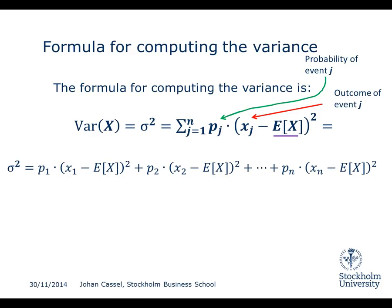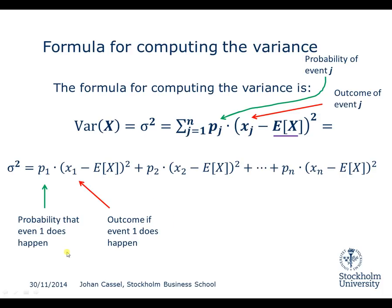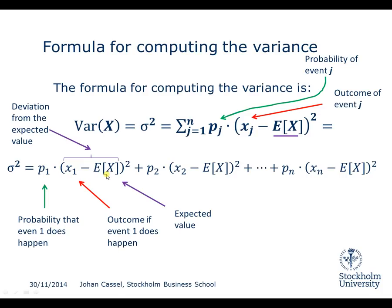You can write it in a slightly expanded form to make it easier to follow. x1 is the outcome if event 1 happens, and P1 is the probability that event 1 happens. E(x) is the expected value, which we then subtract. If we look at that parenthesis: we take the outcome of an individual event and subtract the expected value — that's a deviation from the expected value. We then square it to make all deviations positive, because without squaring, positive and negative deviations would cancel out.